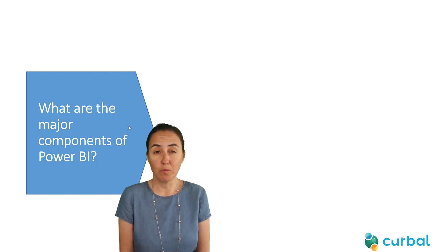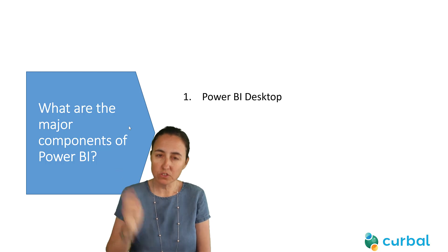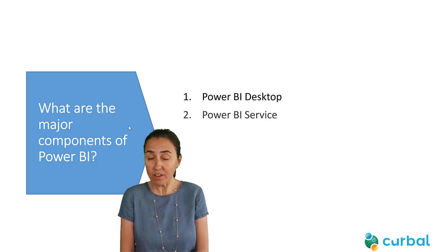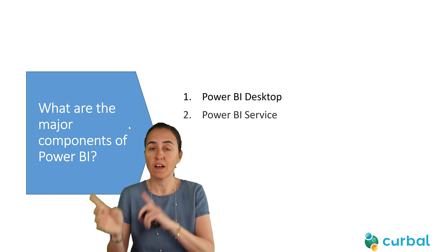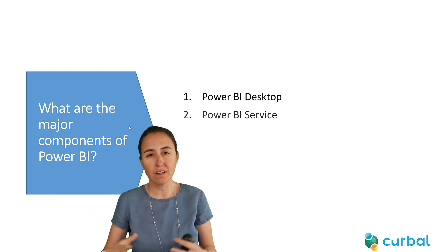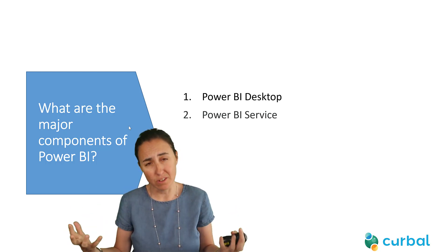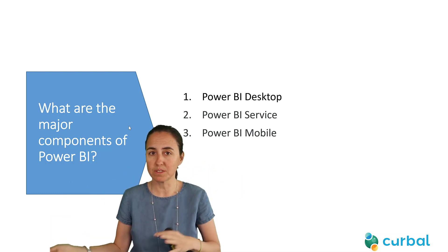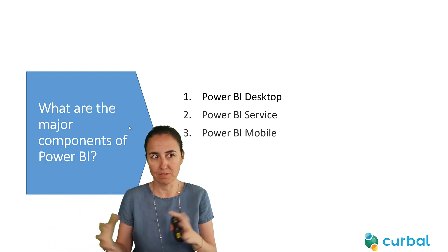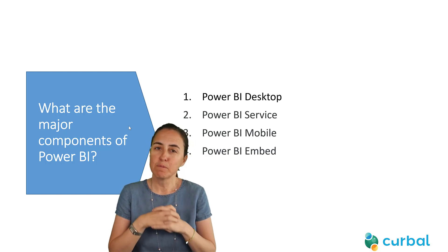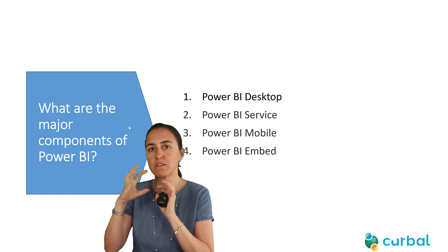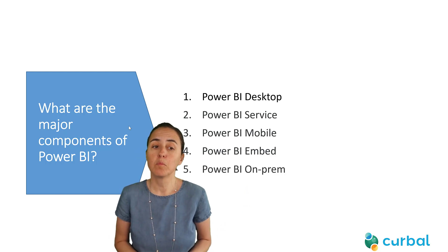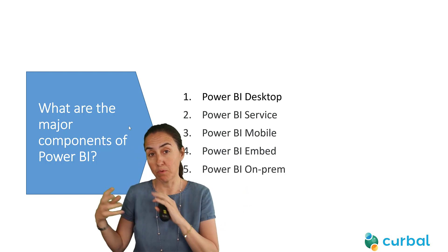What are Power BI's major components? First you have Power BI Desktop, which is a program you install on your computer and use to get and analyze data. Then we have Power BI Service, which is Power BI on the cloud — you can do some of the things you do in Desktop and share reports and collaborate with others. Then there's Power BI Mobile, which lets you view reports on mobile phones and tablets. And Power BI on-prem, which is a reporting solution on-premises.